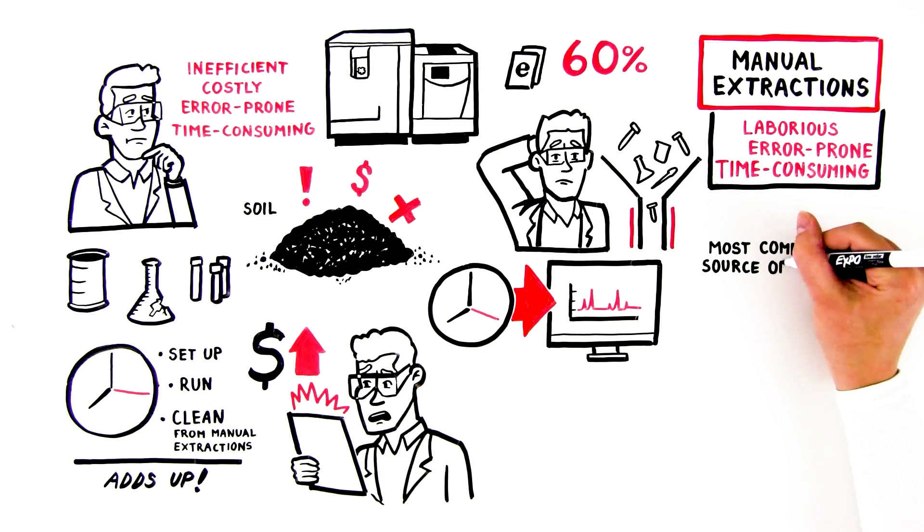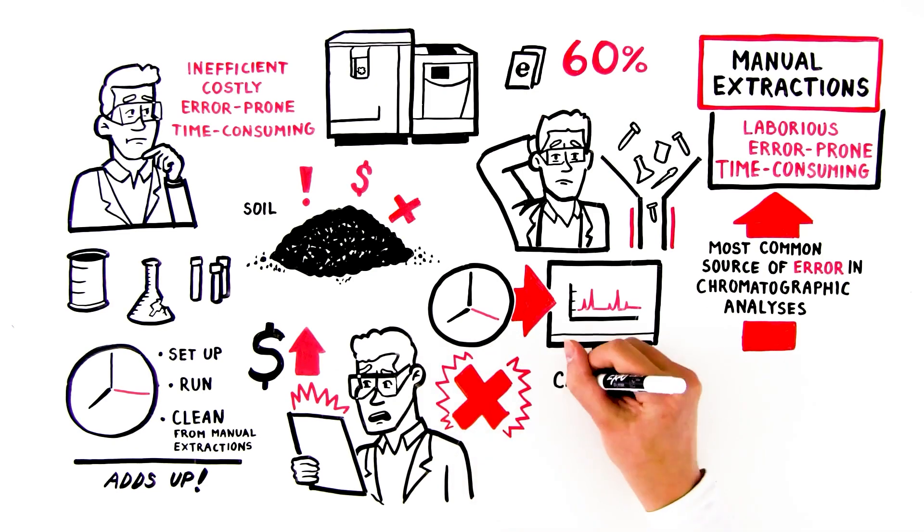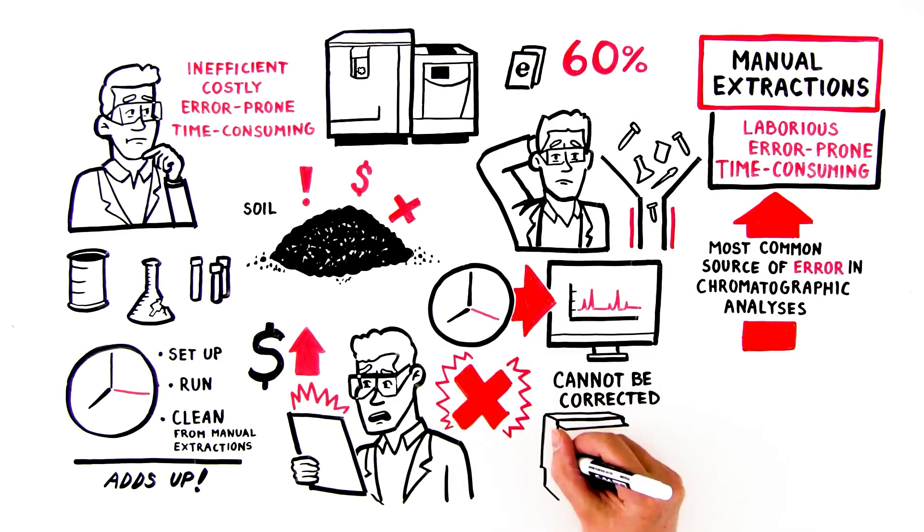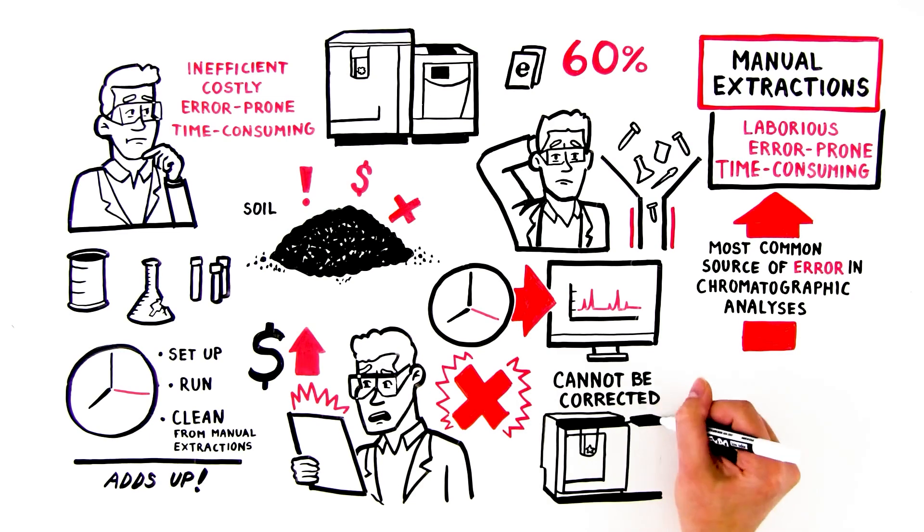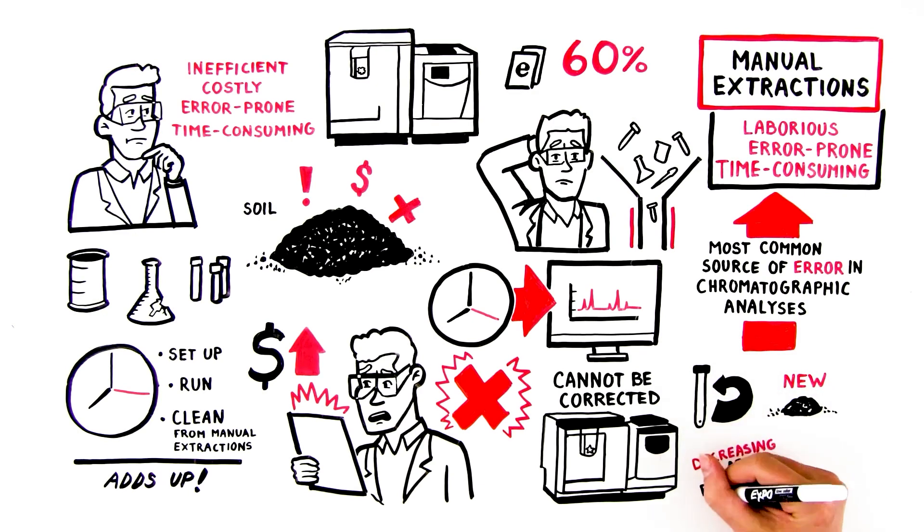The most common source of error in chromatographic analyses are from manual sample prep. When these errors happen, they cannot be corrected, even using the most advanced analytical methods available. Instead, the sample must be rerun, or new ones must be obtained, decreasing lab efficiency and throughput, therefore increasing costs.